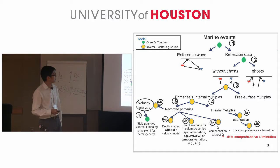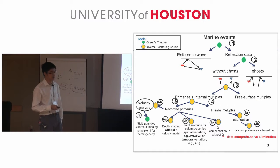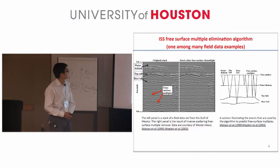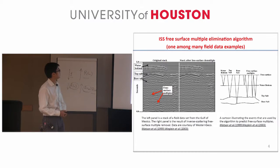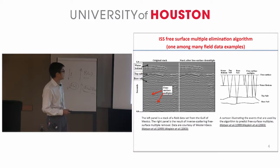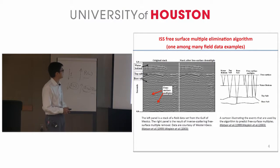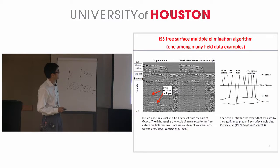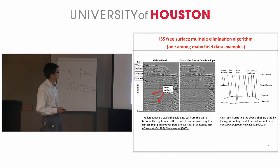This slide shows where this presentation sits in the processing tree. Here shows one of the field data examples for the ISS free surface multiple elimination algorithm. The data is from the Mississippi Canyon-Western Chico challenging dataset. The left panel is input data and the right panel is after ISS free surface multiple elimination. This result shows that the ISS free surface multiple elimination algorithm can effectively remove the free surface multiple.